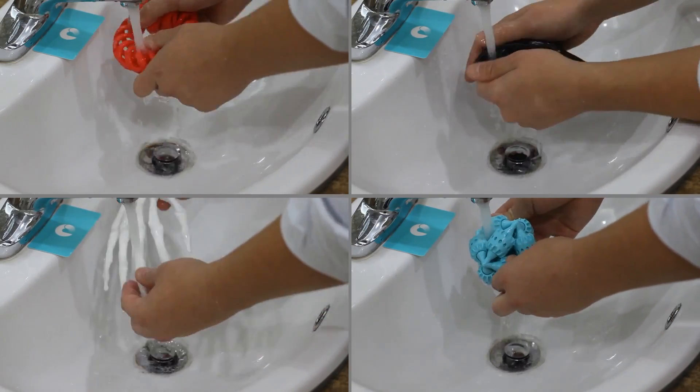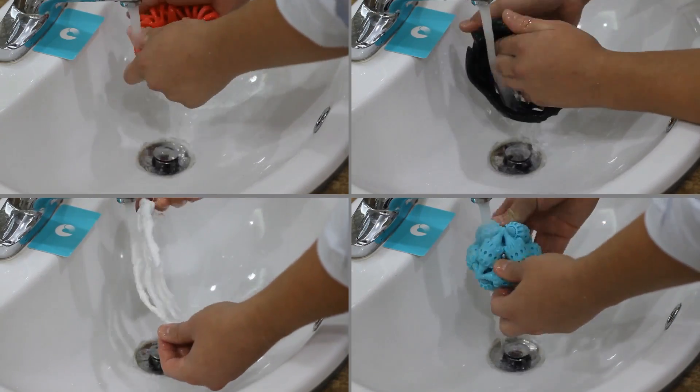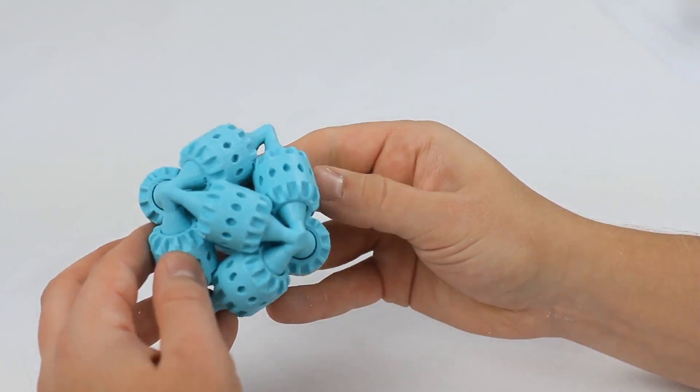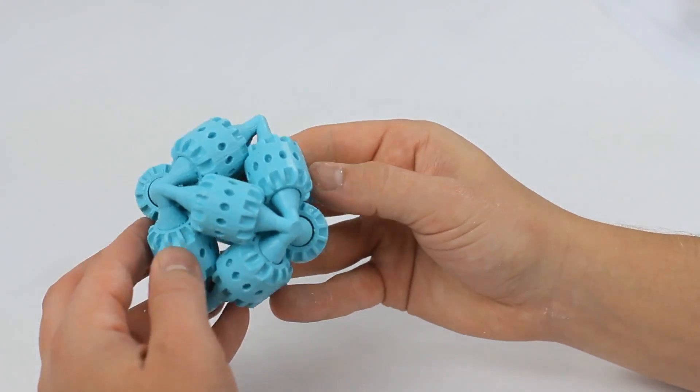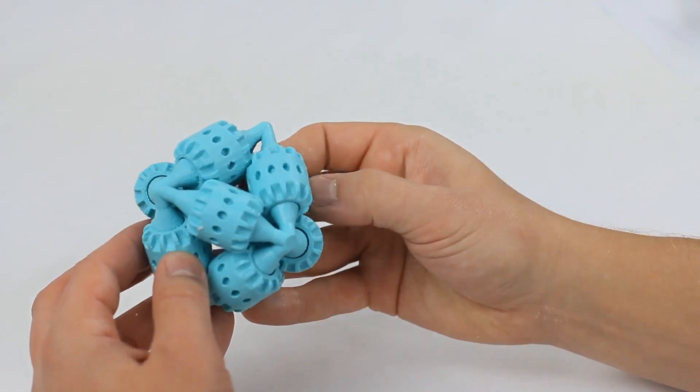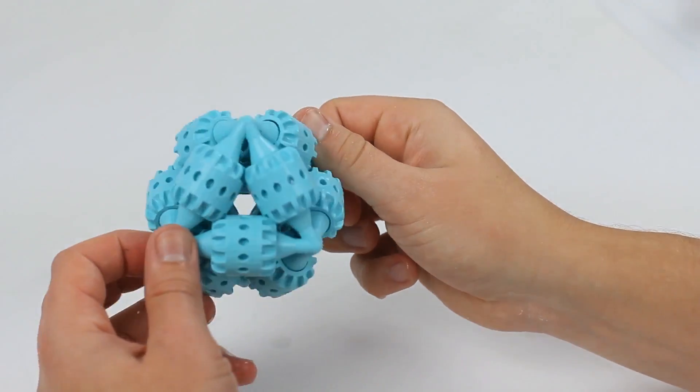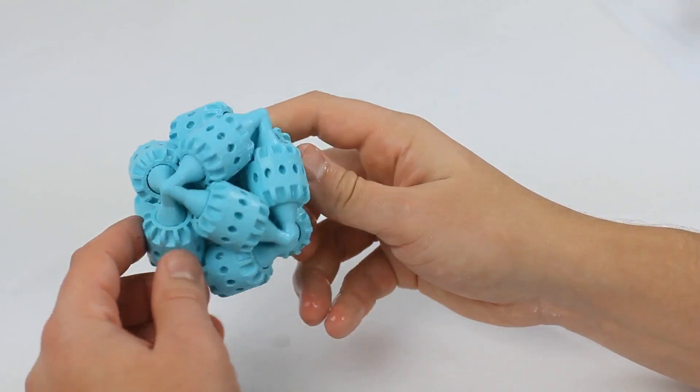After one hour remove your model from the bath and rinse with water. This brain gear would be impossible to print without 702. The fine gaps between the axles and the gears would be unreachable using traditional support. 702 is able to support whole assemblies while still being able to be 100% removed.